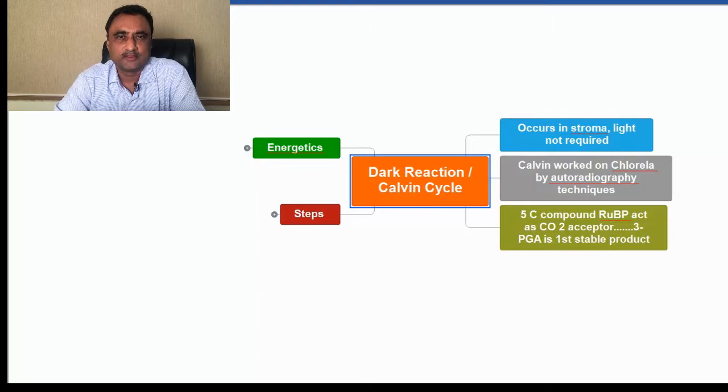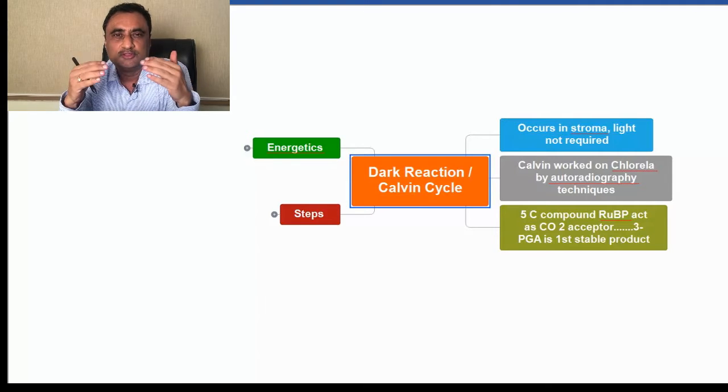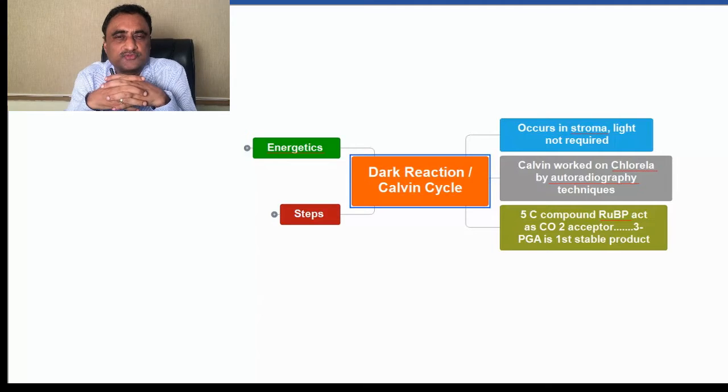Dark reaction is one of the most important parts of photosynthesis in which the fixation of atmospheric CO2 occurs in the form of carbohydrate. This is Dr. Pankaj Kumar and we will learn about the steps of the dark reaction, popularly called the Calvin cycle or C3 cycle.